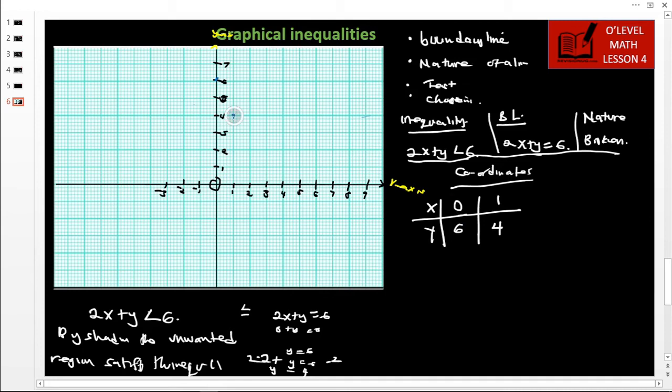And then we plot 1 and 4, so our point is here at 1 and 4. So we are joining this, it will come like this up to there.